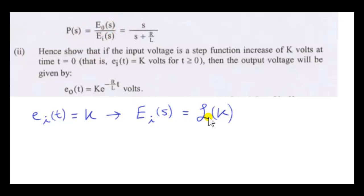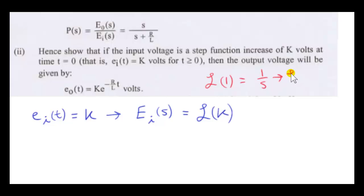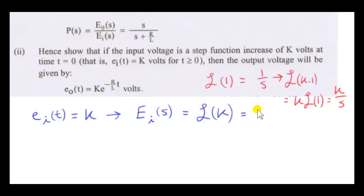To get the Laplace transform of a constant K: if we go to tables, the Laplace transform of one is 1 over S. So the Laplace transform of K — which is just K times one — is K times 1 over S, which is K over S. So big E sub i of S is K over S.